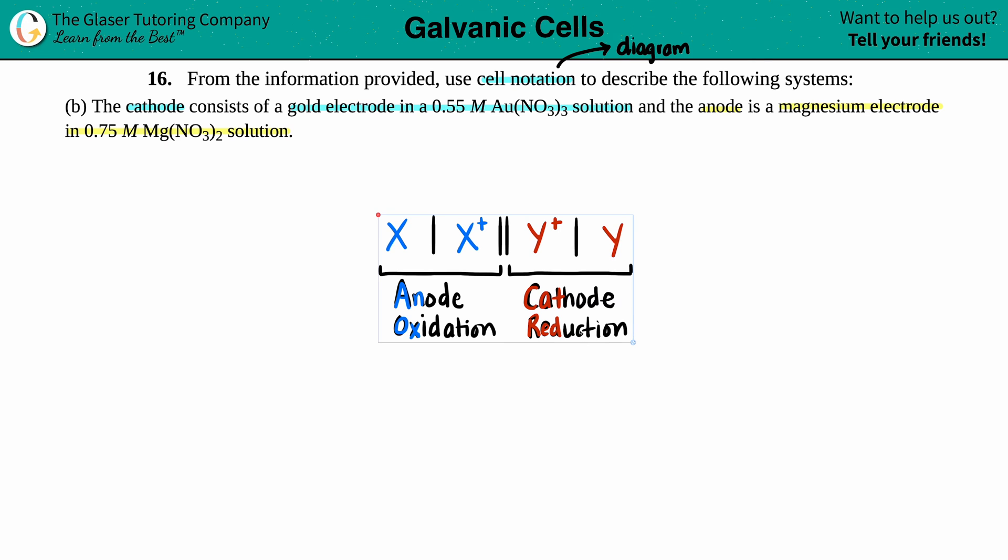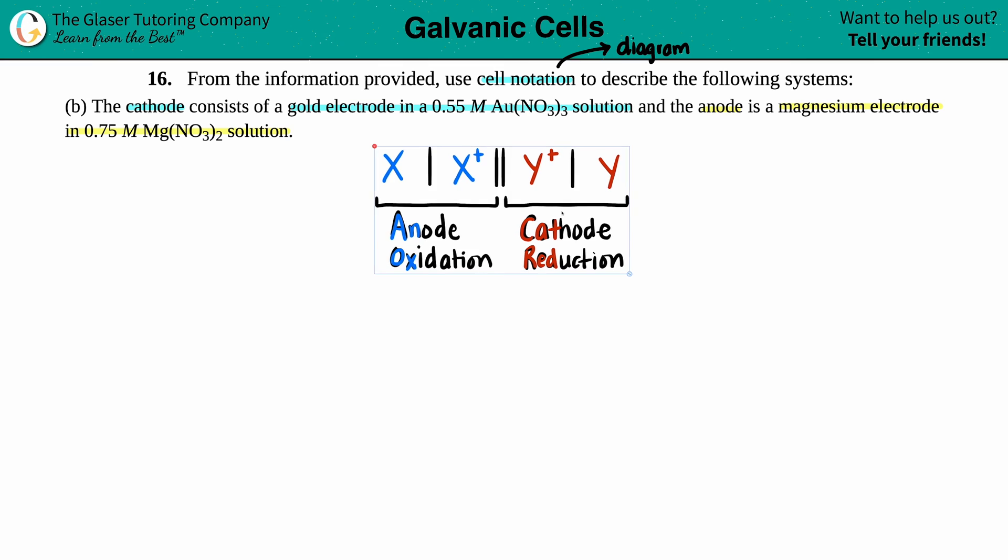Now the general cell notation can be seen as this. We're going to be writing this reaction in terms of brackets. The two half reactions I've written, one in blue and one in red, is divided by a double bracket. The first one is always talking about the anode, especially if we're in galvanic cells. The second part talks about the cathode.